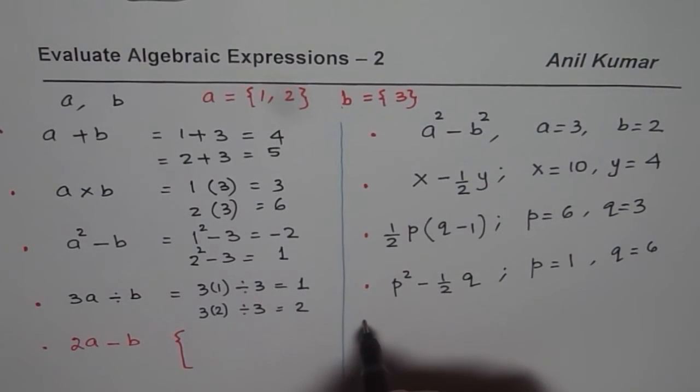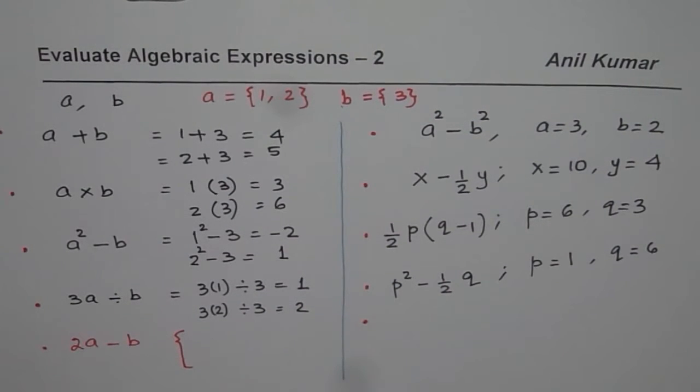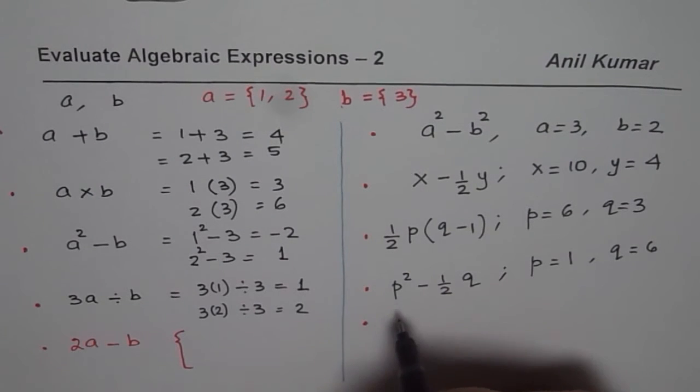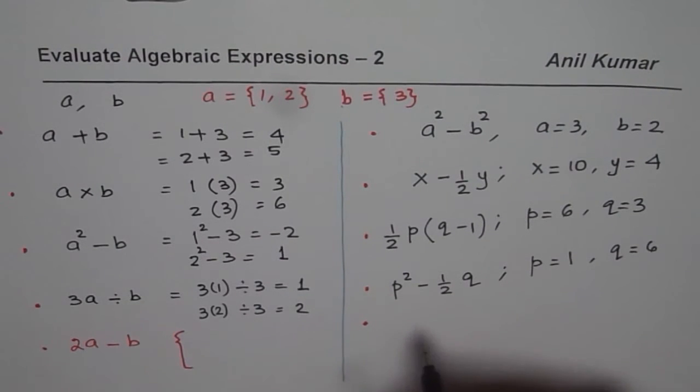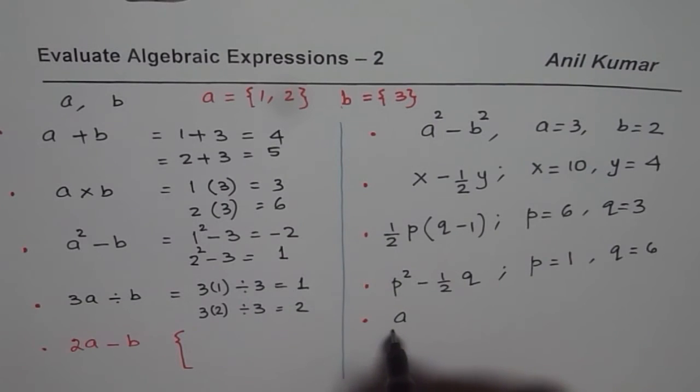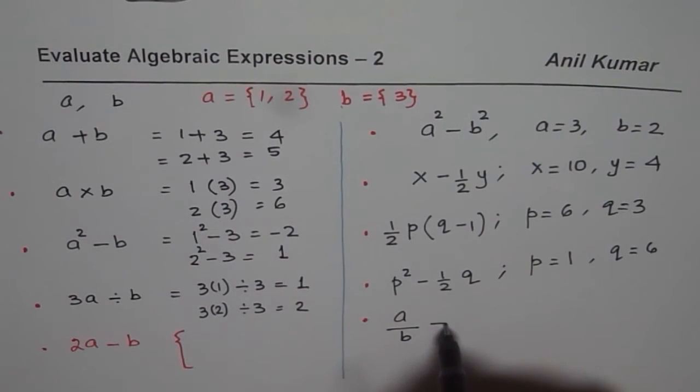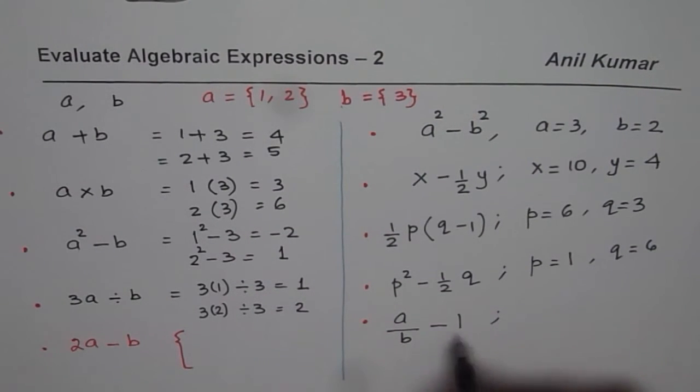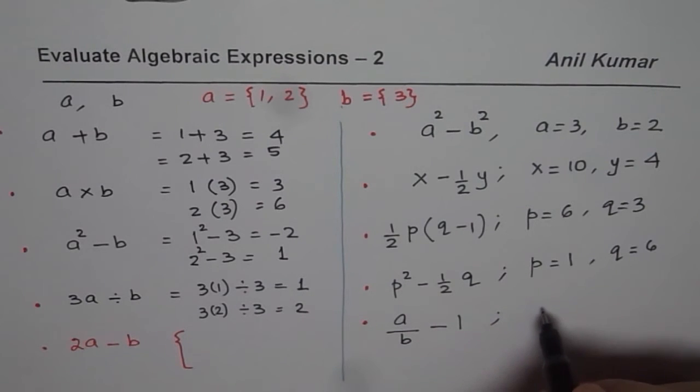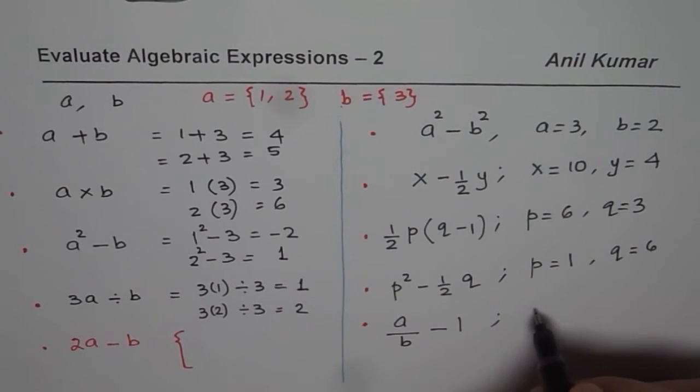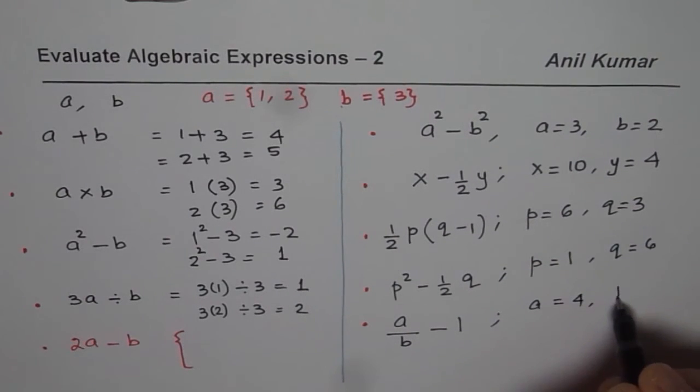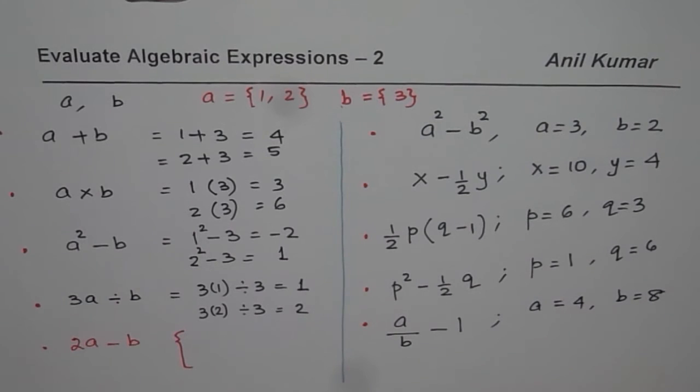Now here is a thinking question for you and that is, if I write that A divided by B minus 1, in that case I am giving you different values of A and B, you can find the answer. So A is equals to 4 and B is equals to 8. So find out the answer for this particular question.